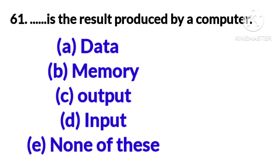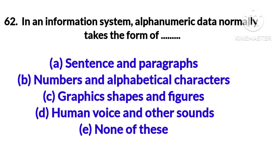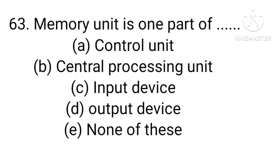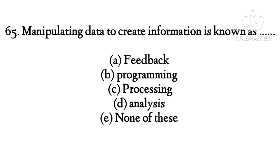Question 62: Dash is the result produced by a computer. The right answer is output. Question 63: In an information system, alphanumeric data normally takes the form of dash. The right answer is B, numbers and alphabetical characters. Question 63: Memory unit is one part of the right answer is central processing unit. Question 64: Computer dash is whatever is typed, submitted or transmitted to a computer system. The right answer is A, input.